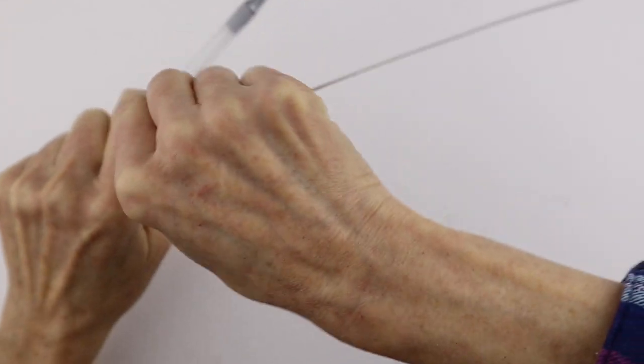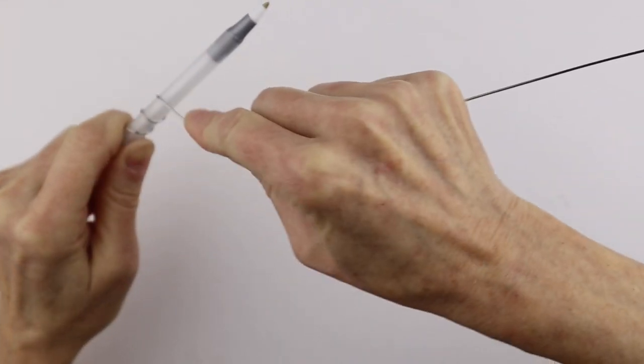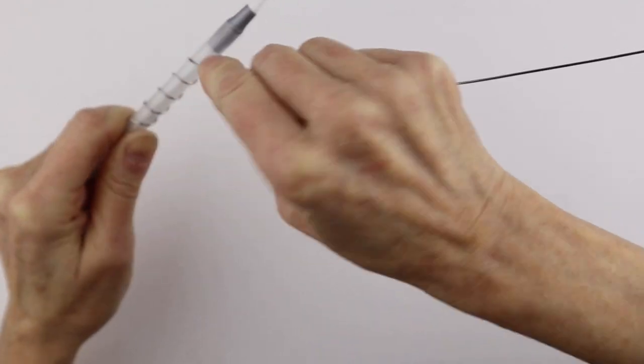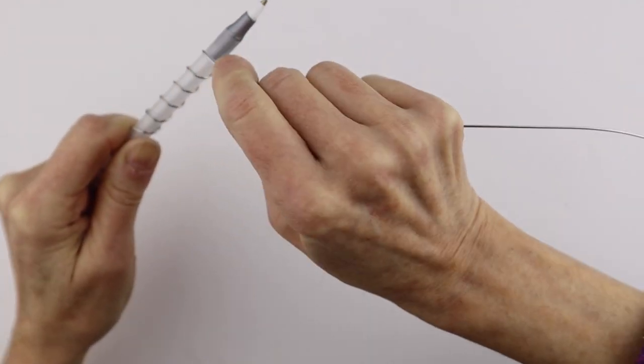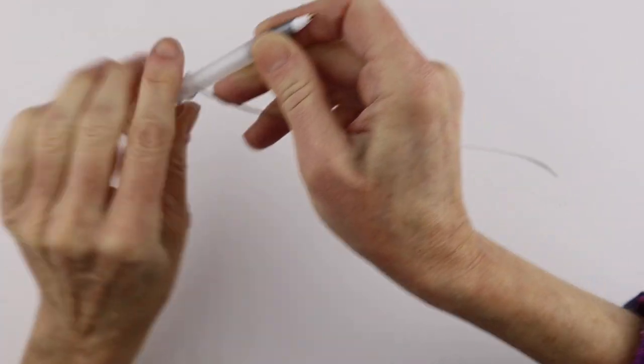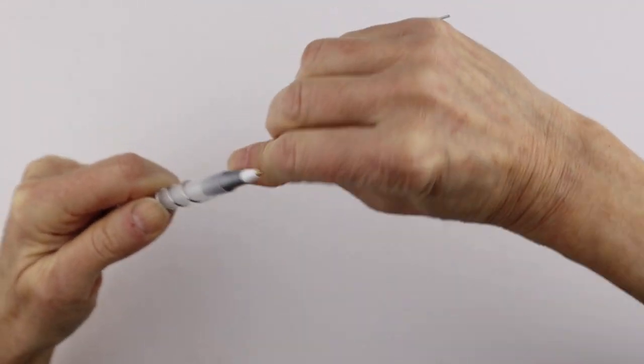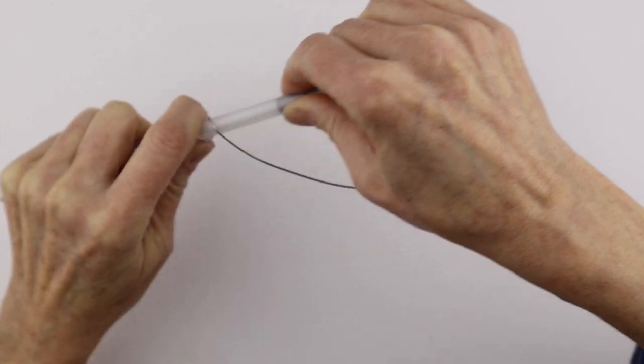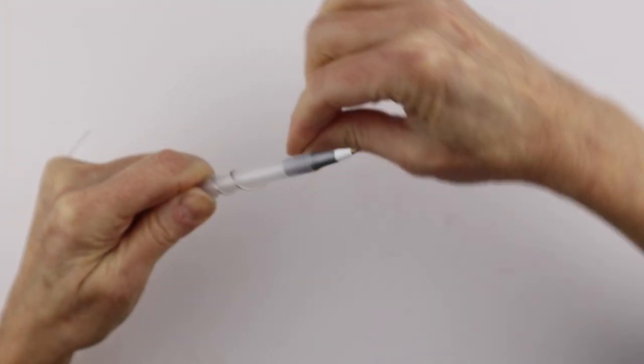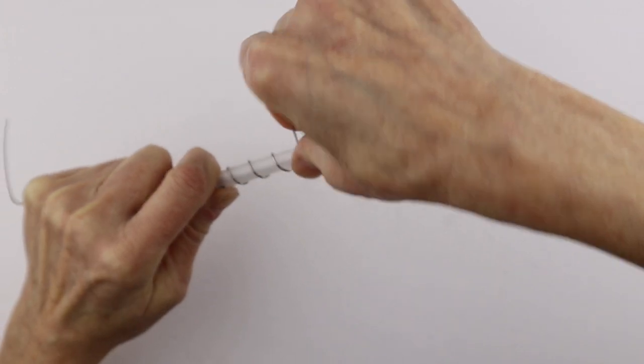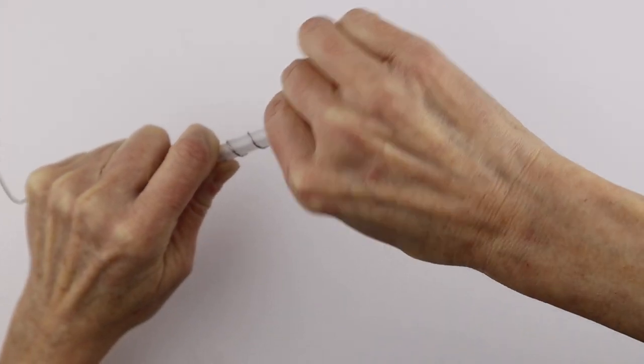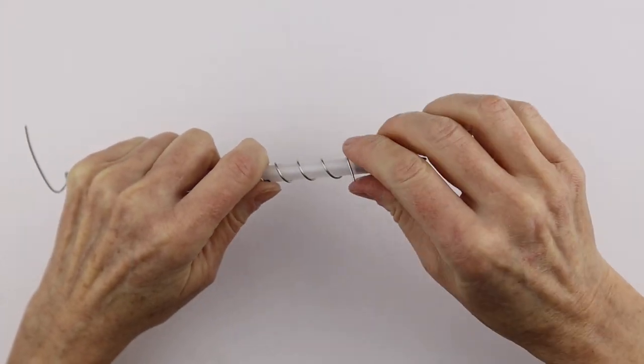Try to stay somewhat consistent with the distance of your wires, but it's not super important. You can adjust it after. Move your hand along as you need to and keep going until we've used all the wire. You can push it down as you go. They're on a slight angle to the right and we're going to go all the way to the end.